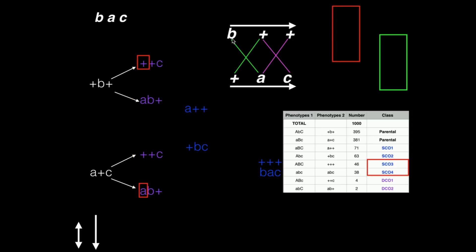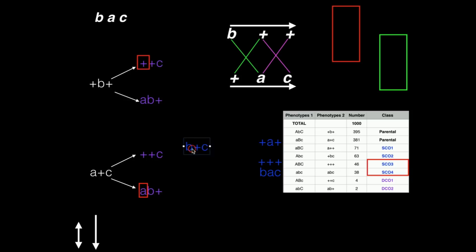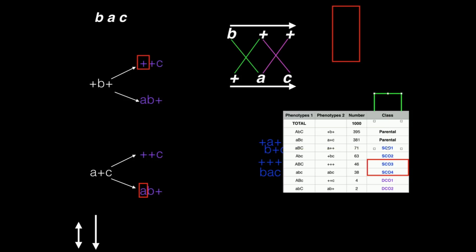Starting at the top but only crossing over at the second crossover position gives B plus C — that's single crossover two. Starting at the bottom and only doing the second crossover gives plus A plus — that's single crossover one. So single crossovers one and two are a pair, corresponding to a crossover between A and C, and single crossovers three and four are another pair, corresponding to a crossover between B and A.